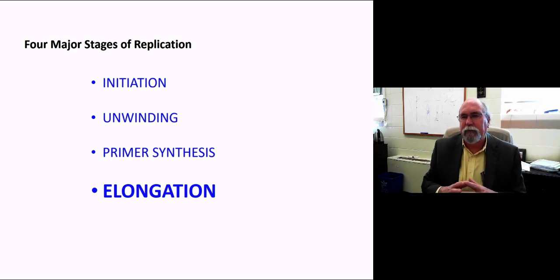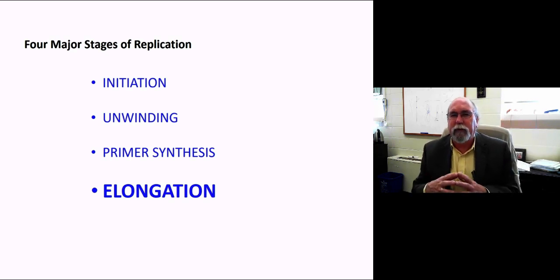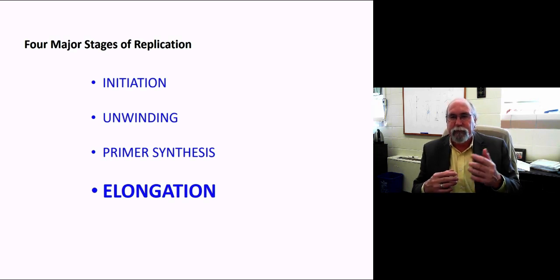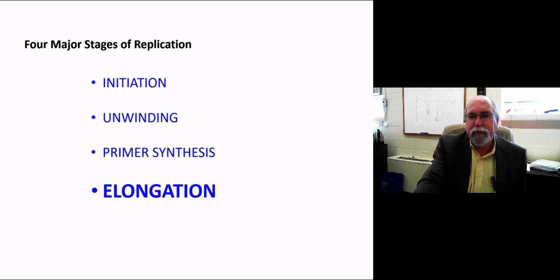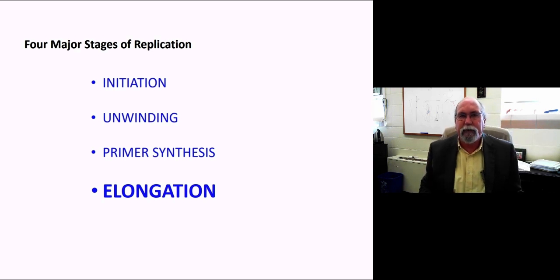Well, this is the third and final portion of our lectures on replication. In the last two lectures, the first one we talked about how we figured out it was semi-conservative replication and what that meant. In the last one, we actually walked through all four of the major stages of replication using kind of a combination of bacterial information as well as eukaryotic information, mixing those together.